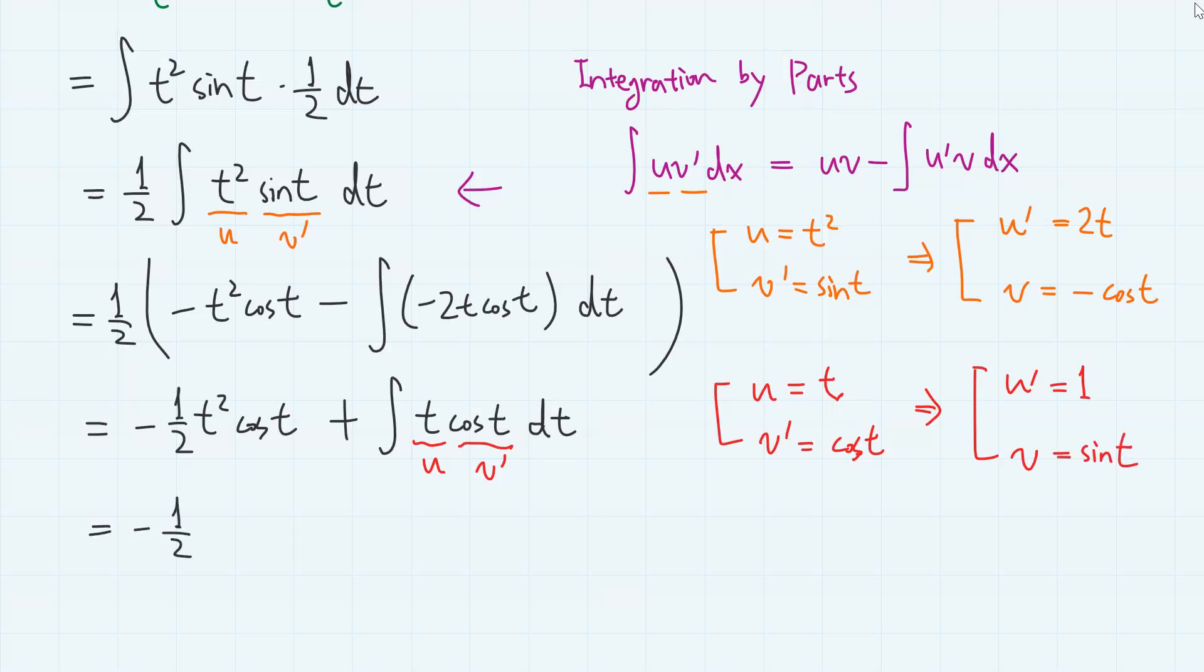So minus 1 half t squared cosine t plus uv t sine t minus integral u prime v. So sine t dt.